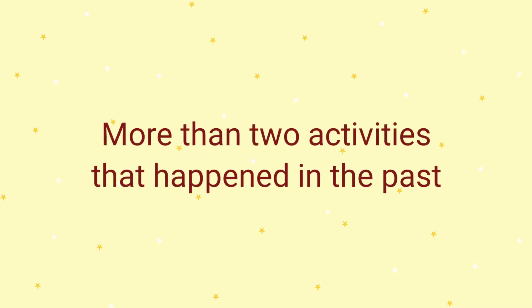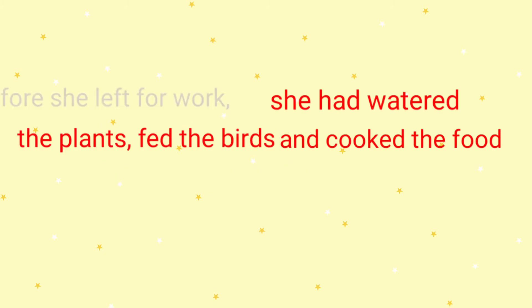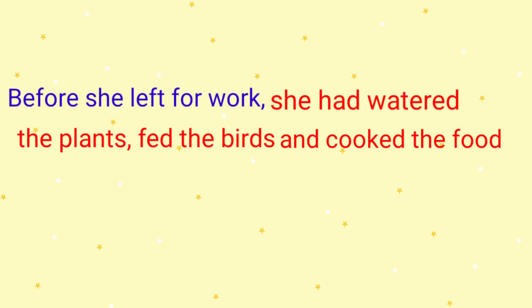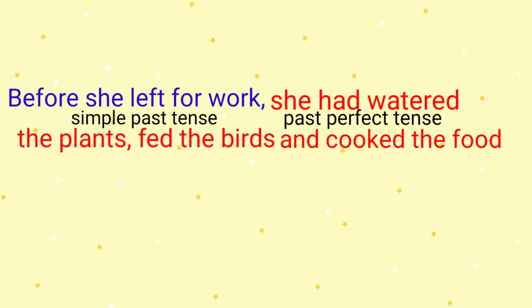Now, there can be more than two activities that happened in the past. For example, before she left for work, she had watered the plants, fed the birds and cooked the food. She did so many things before she left for work. So the activities that happened before the last activity — which is she left for work — have been clubbed together and expressed in the past perfect tense, whereas the last activity is expressed in the simple past tense.